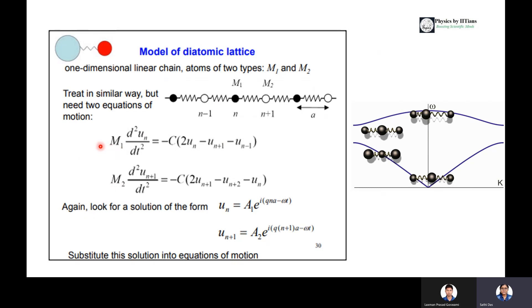We can write the motion as M1 d²un/dt² equals F, which from Hooke's law is minus Kx. Force is inversely proportional to displacement, and from F equals mass times acceleration, the overall displacement can be written as minus C times (2un minus un+1 minus un-1), where C is the force constant or restoring force constant.